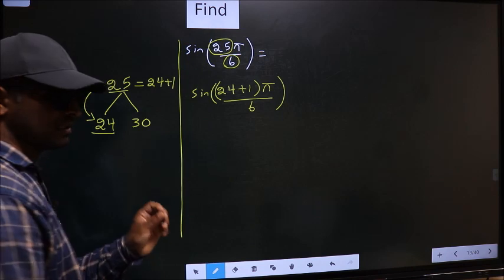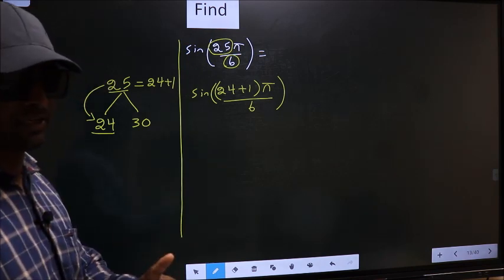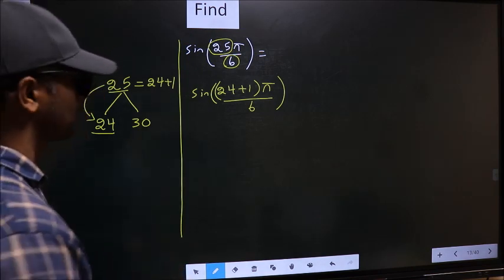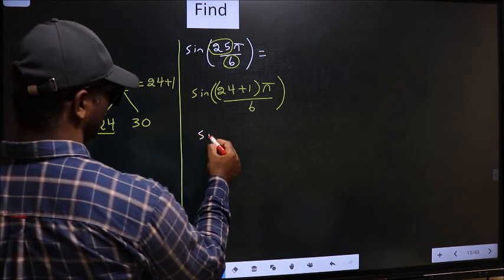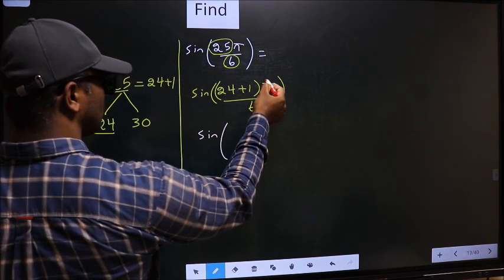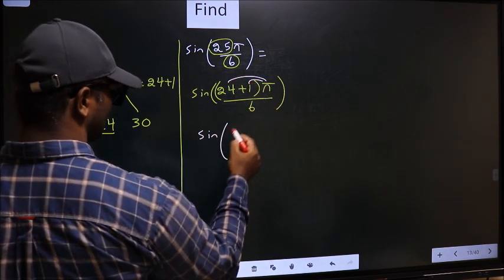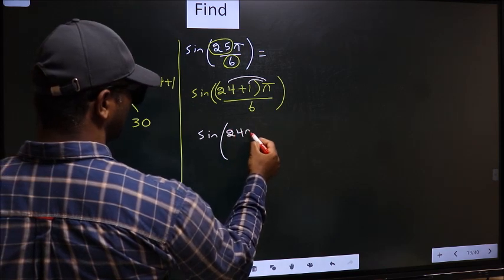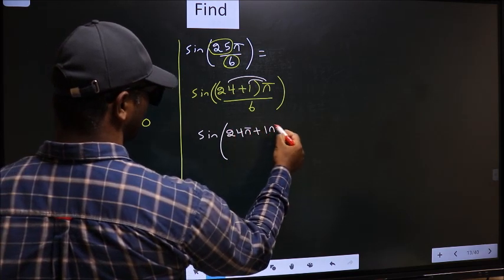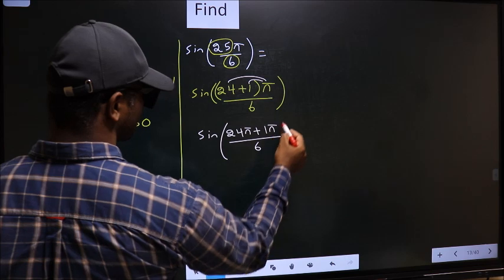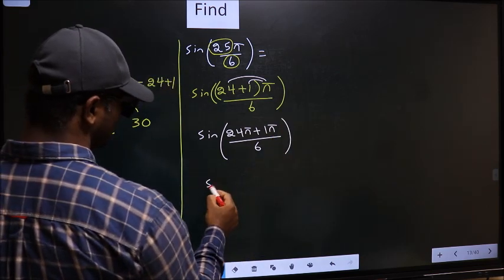This is your step 1. Next, sine. Now you should open up the brackets. So you get 24π plus 1π by 6.